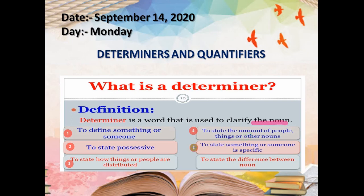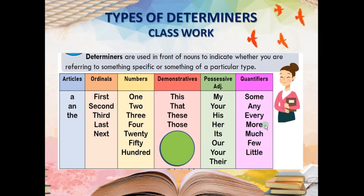The main important thing you have to keep in mind is: a determiner is used to clarify the noun. Now let's see the types of determiners. This is your classwork also, students. First of all, you have to write down the definition. The definition is: determiners are used in front of nouns — always in front of nouns, not after — to indicate whether you are referring to something specific or something of a particular type.